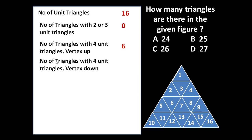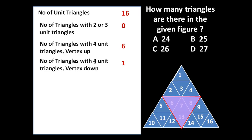Now let us find out the number of triangles with four unit triangles vertex down. The previous ones were vertex up, now vertex down — how many such triangles are possible? Only one such triangle is possible from the given figure. So let us write one here.